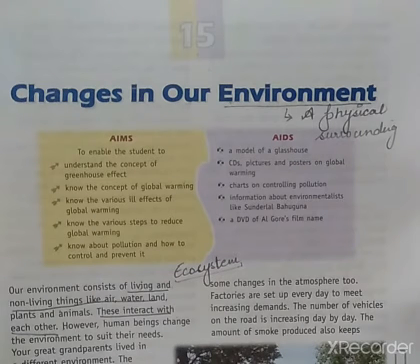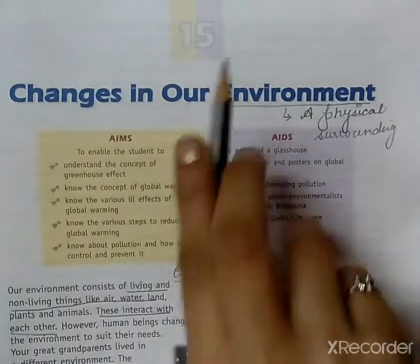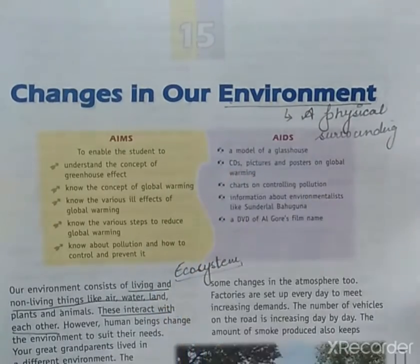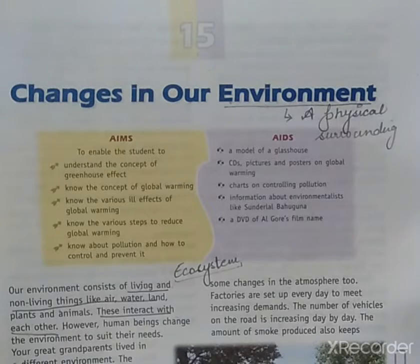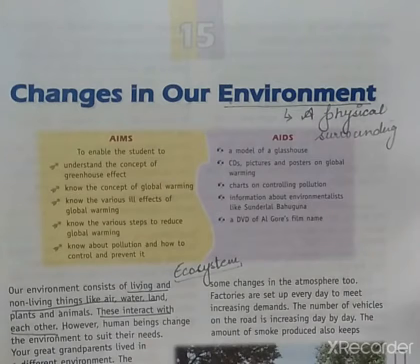Changes in our Environment — what is an environment? Environment is basically our surrounding, our physical surrounding. That is called environment. This environment consists of certain living things and non-living things.